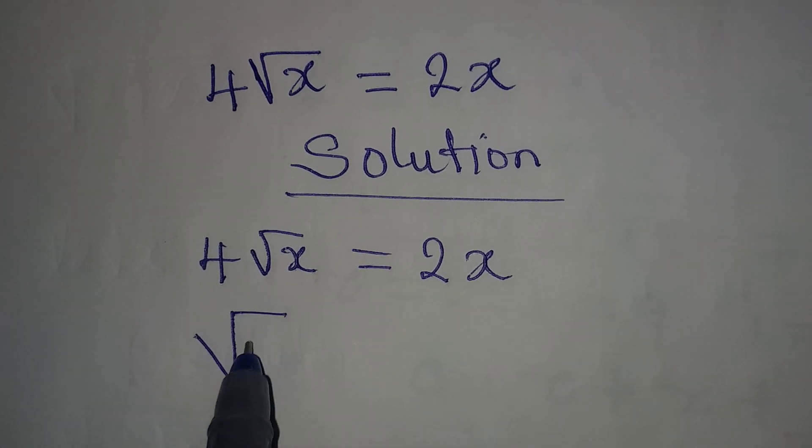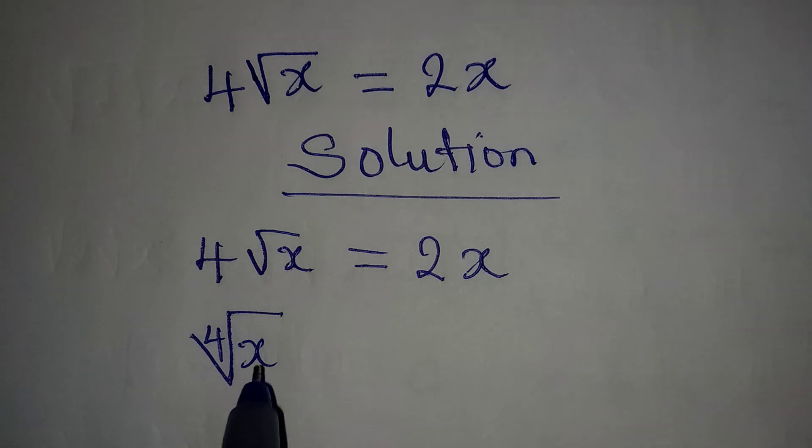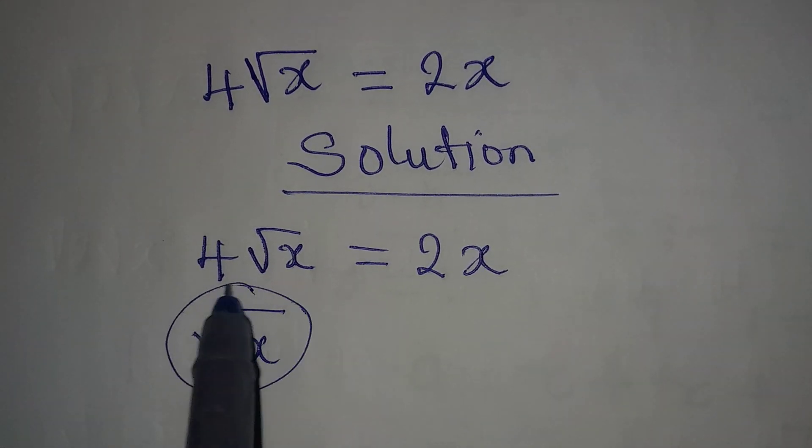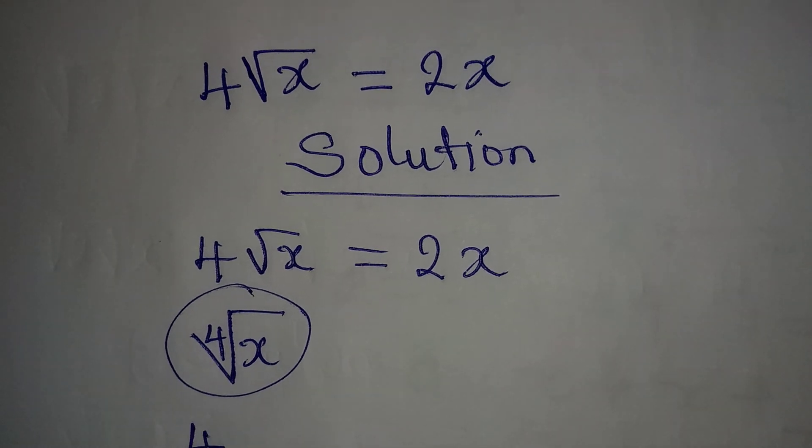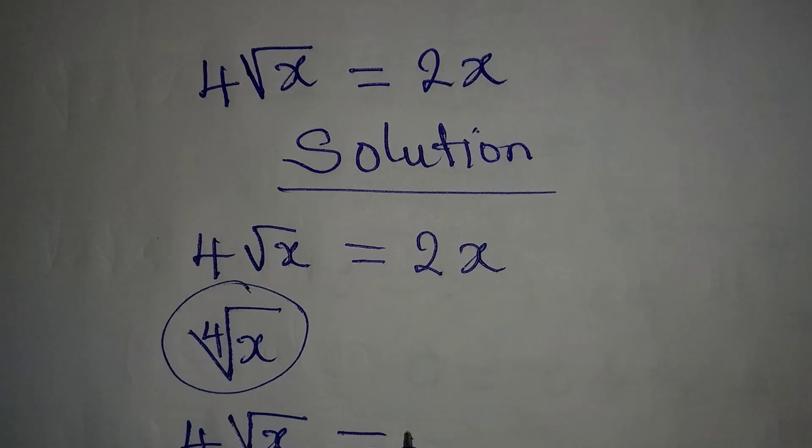Fourth root of x will be written like this, and this is not the same thing as what we have over there. So we are not using this. We have 4√x = 2x.